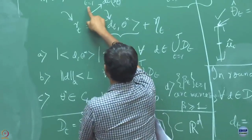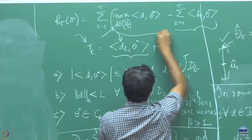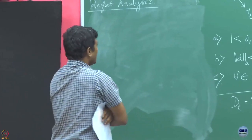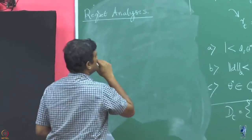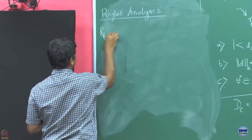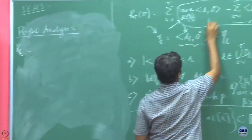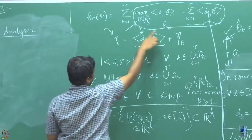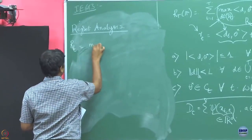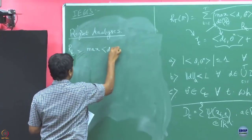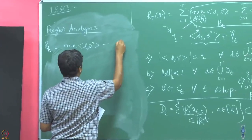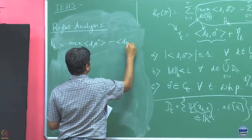What is the regret in round t? The regret in a particular round t is this. I will use notation r_t (small t) to denote this quantity, and R capital T is the summation of all r_t's. So r_t is nothing but max over d of (θ* · d_t*) minus whatever you played d_t into θ*.